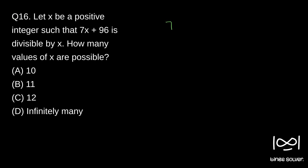If 7x plus 96 is divisible by x, that means it will be of the form kx, where k is any positive integer. If you rearrange, since 7x plus 96 is equal to kx, we get x into k minus 7 equals 96.